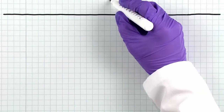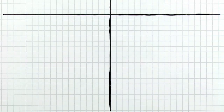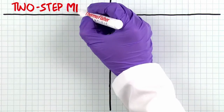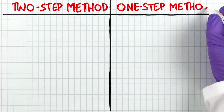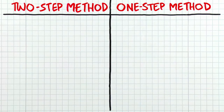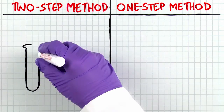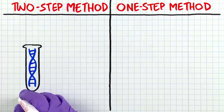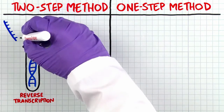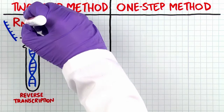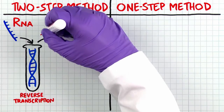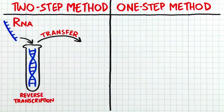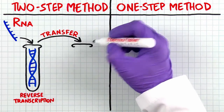There are two primary approaches to reverse transcription for qPCR, known informally as two-step or one-step methods. In the two-step approach, the first step is reverse transcription of the RNA to generate first-strand cDNA, or complementary DNA. At this point, the cDNA can be stored or moved to the second step.